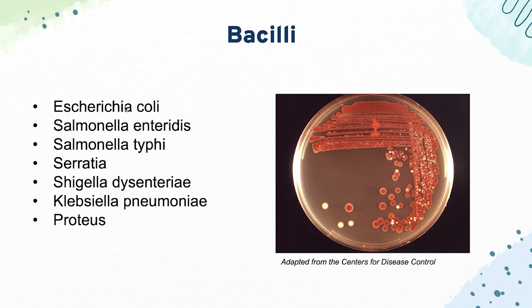Next, we have Serratia, which is known for producing a red pigment when it grows and forms a biofilm, and it's often nosocomial. Next, we have Shigella dysenteriae, which causes bloody stools, usually from its enterotoxin called Shiga toxin. Next, we have Klebsiella pneumoniae, which causes a currant jelly sputum — very high yield — and can cause various pneumonias and respiratory infections.